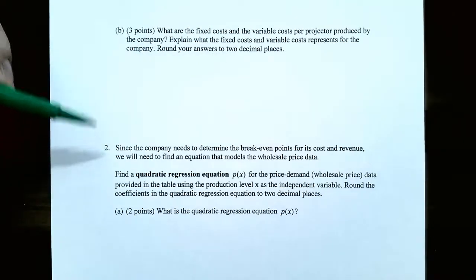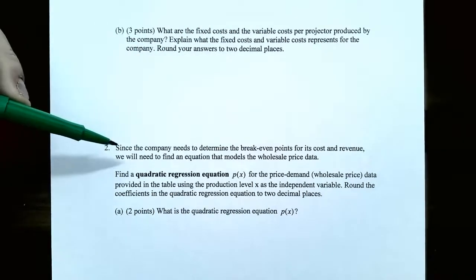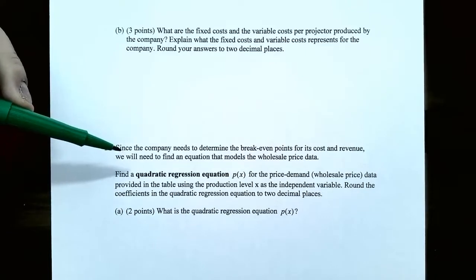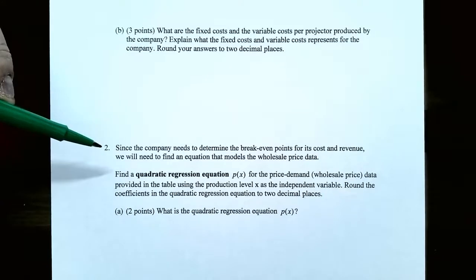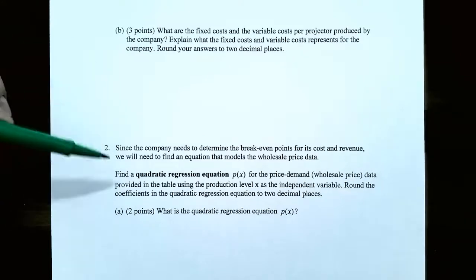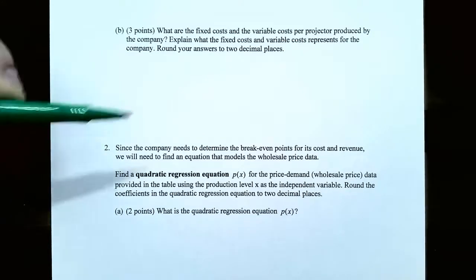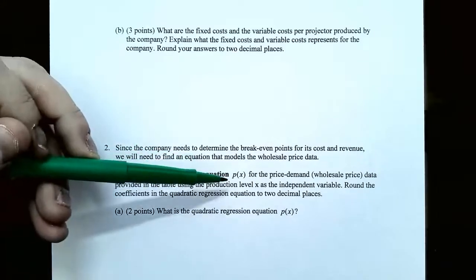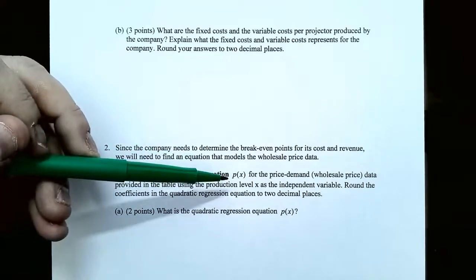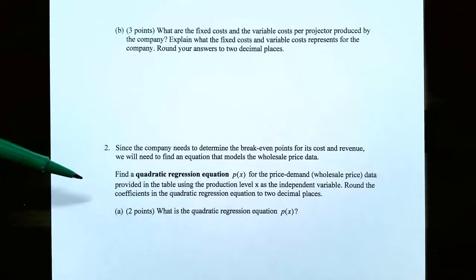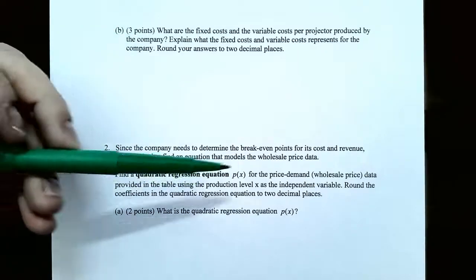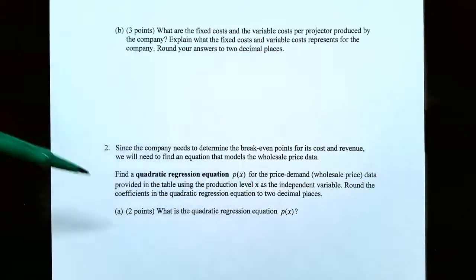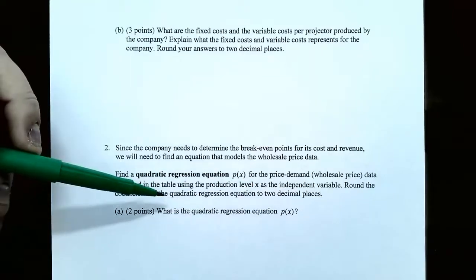Now number two. Since the company needs to determine the break-even points for its cost and revenue, we need to find an equation that models the wholesale price data. Find a quadratic equation p of x — the price-demand or wholesale price data provided in the table — using the production level x as the independent variable. Round the coefficients in the quadratic regression equation to two decimal places.